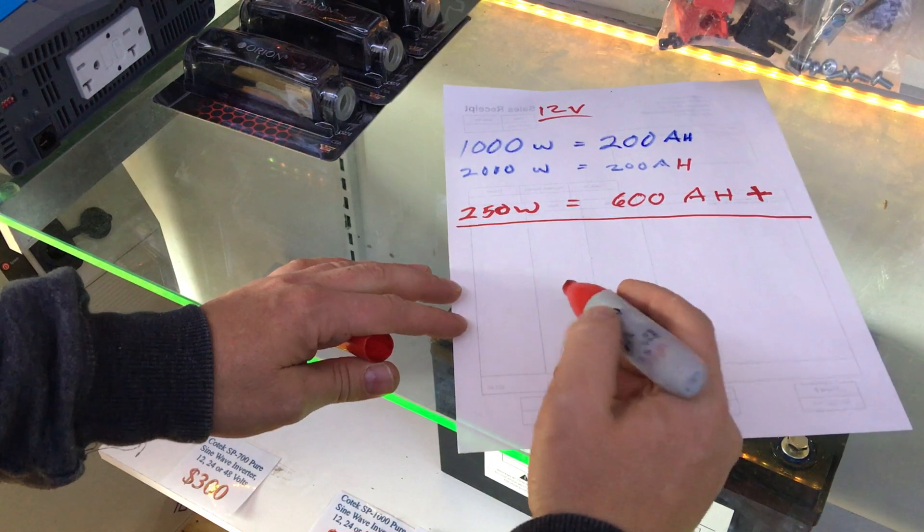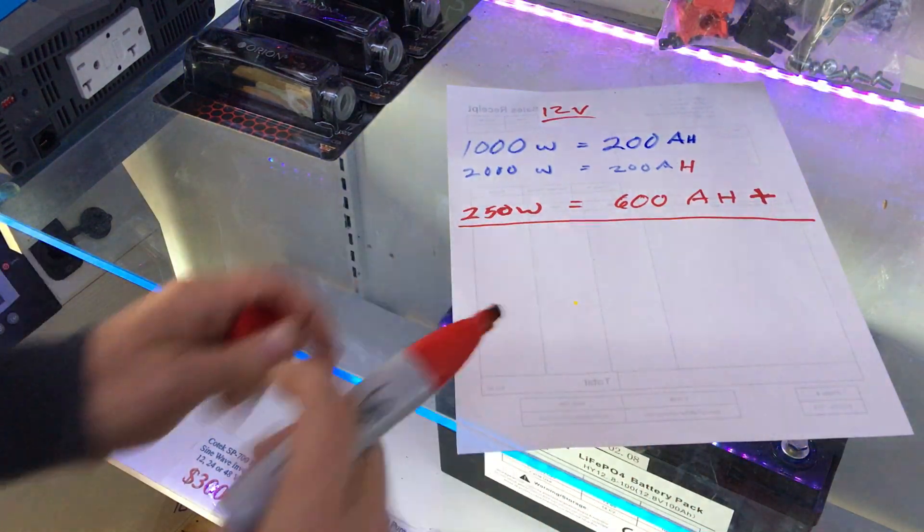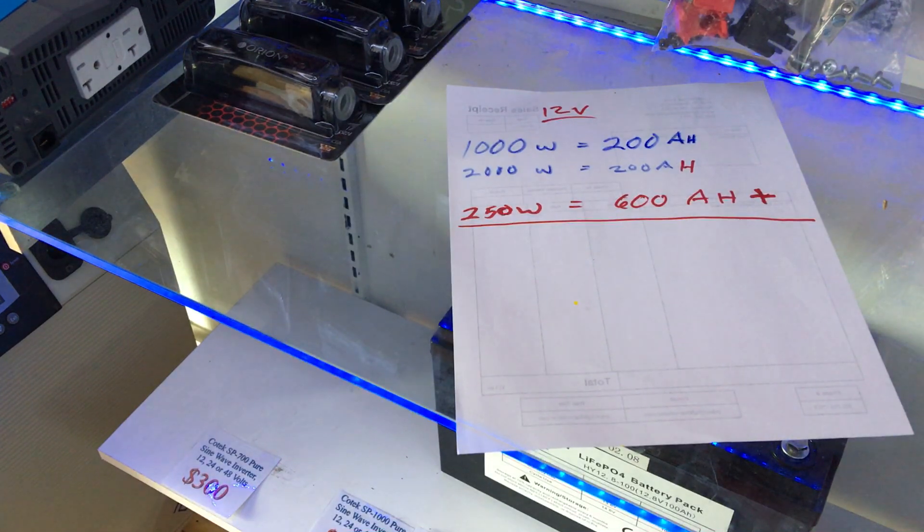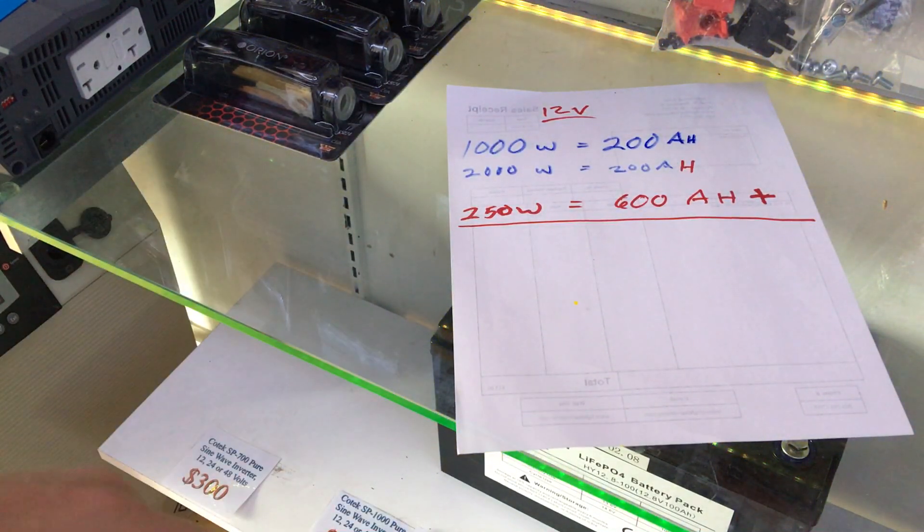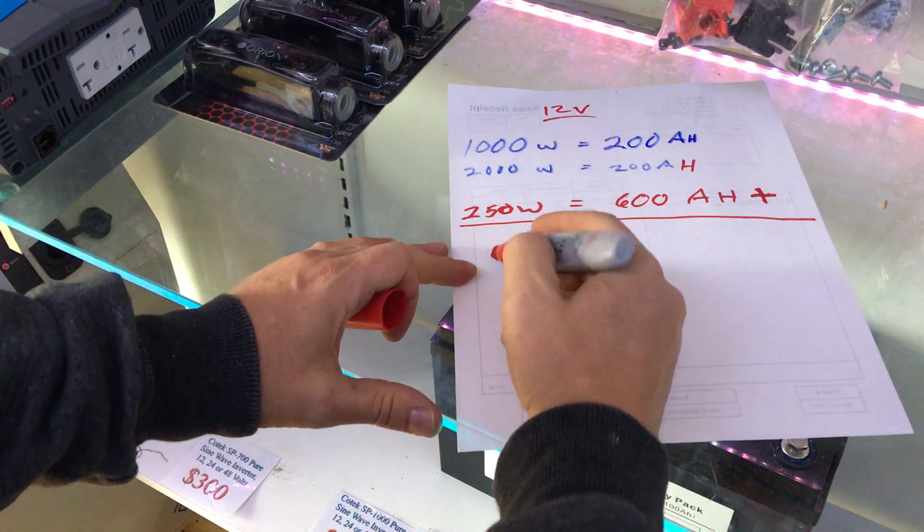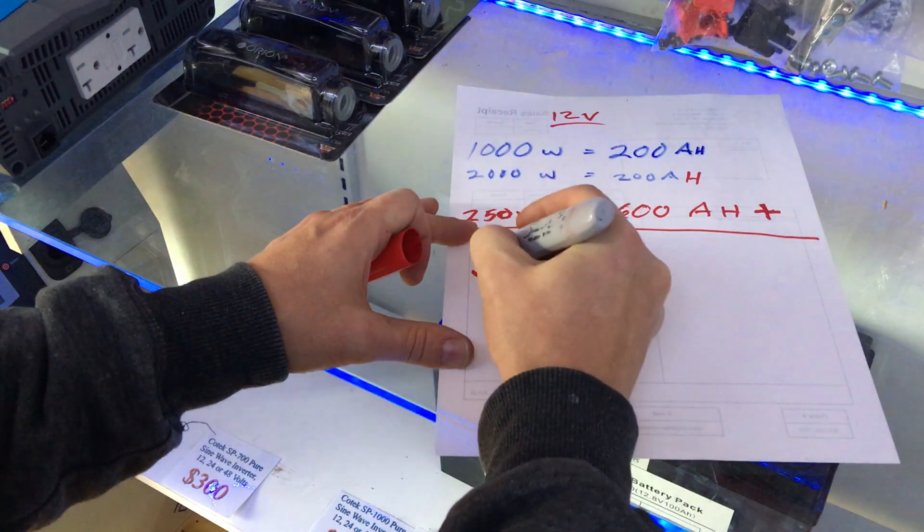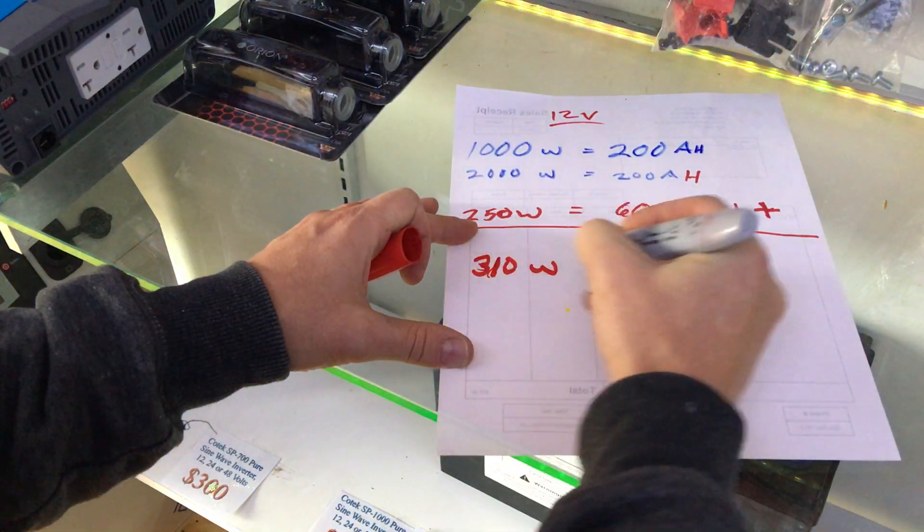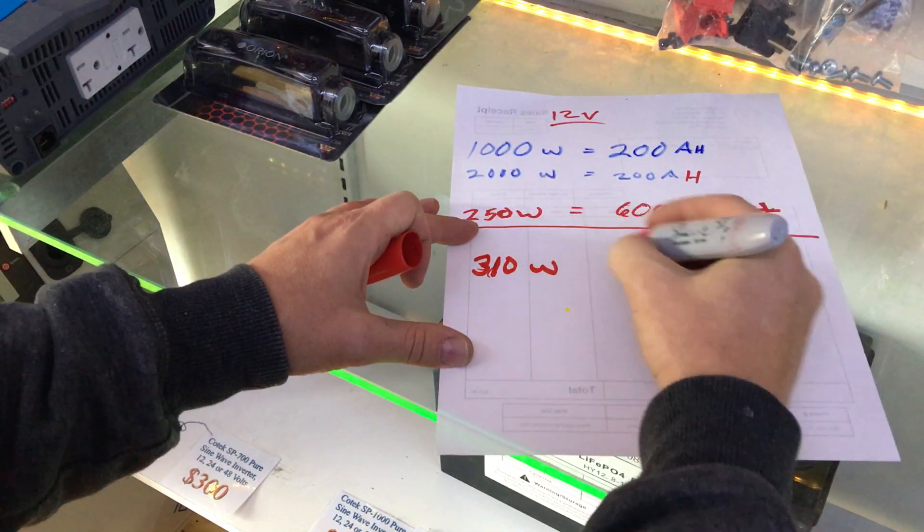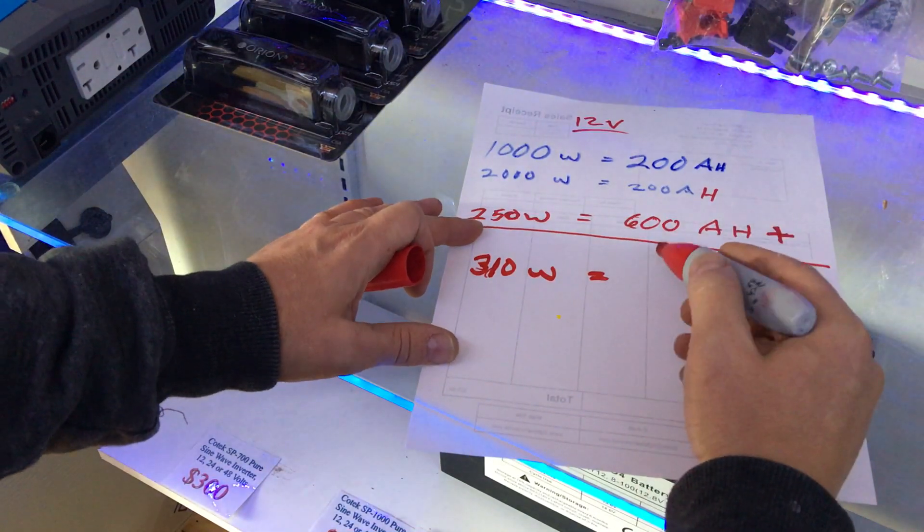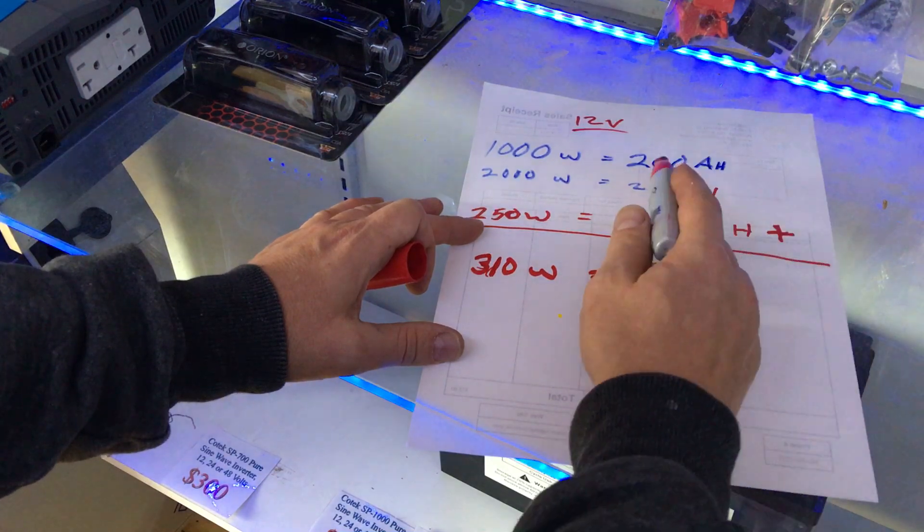So if you want to size for an RV, it's pretty easy. You fit what you can on the roof and work within people's budget. A really super nice kit right now is a 310-watt panel with one or two lithium batteries.